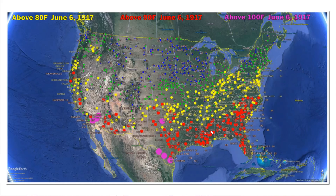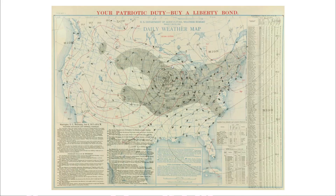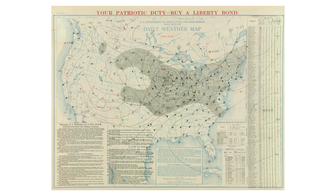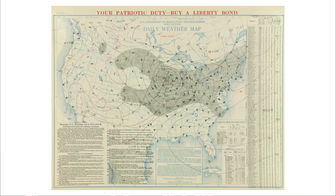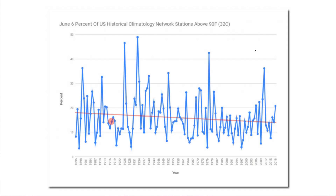Cold Canadian air intersecting with warm, moist Gulf air. This was the weather map from that day. There was a very strong low pressure system over the central part of the country — 29.15 inches of mercury. So we had cold air to the north, warm, humid air to the south, and a very strong low pressure system. No surprise there were a lot of tornadoes that day. This is the graph from 1895 to the present of the percent of U.S. stations over 90 degrees on June 6th. You can see that the likelihood of reaching 90 degrees on June 6th has dropped in the United States since the 19th century. And this red dot here represents June 6, 1917, the day of the tornado outbreak.